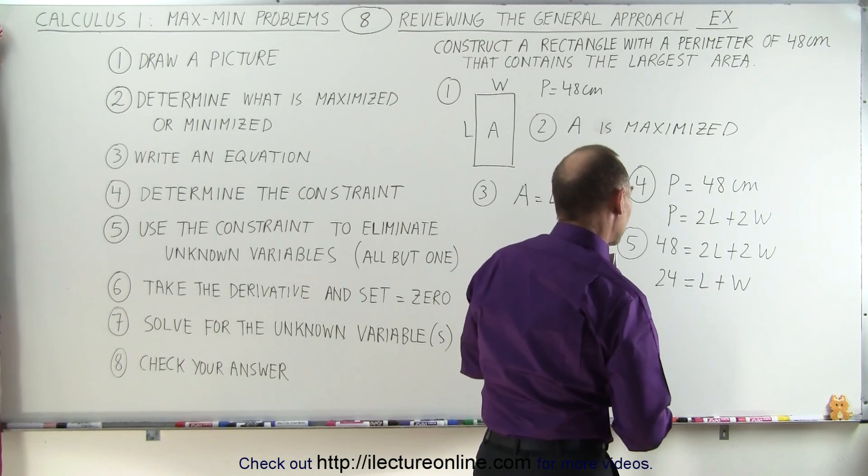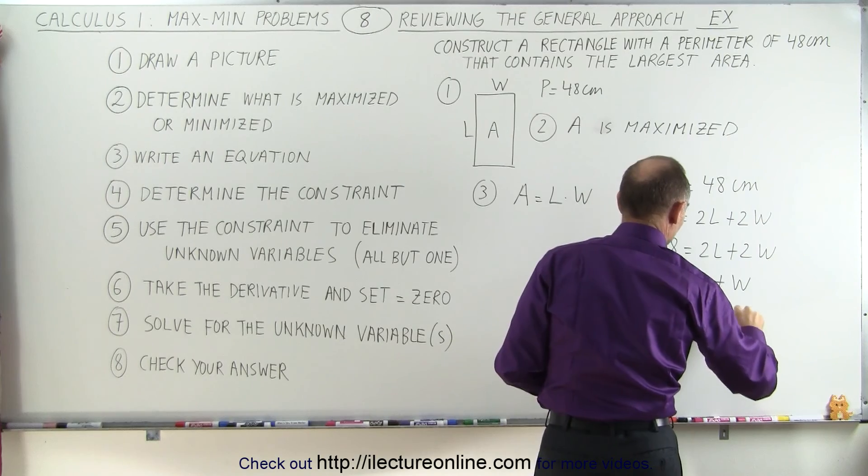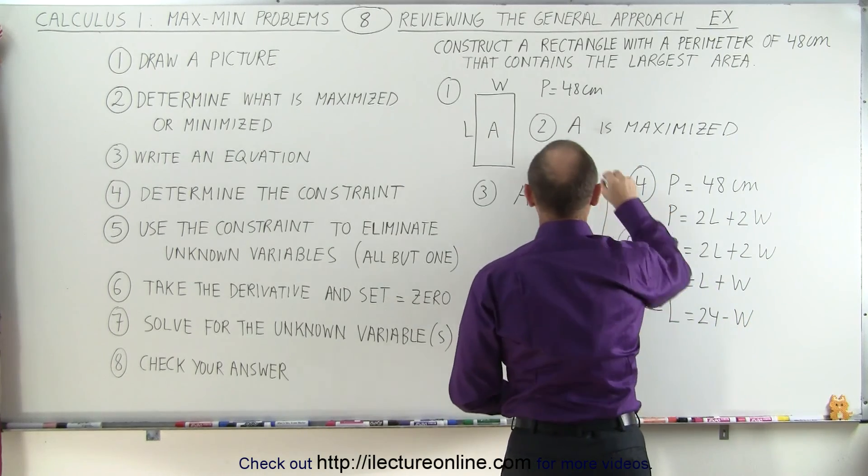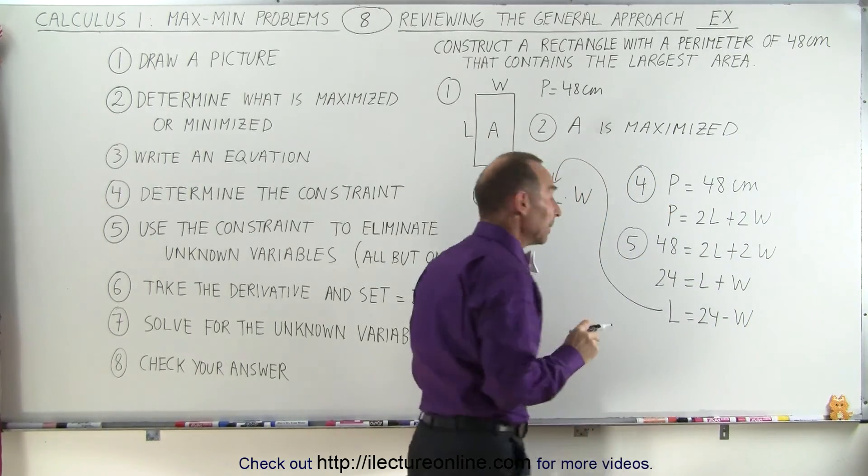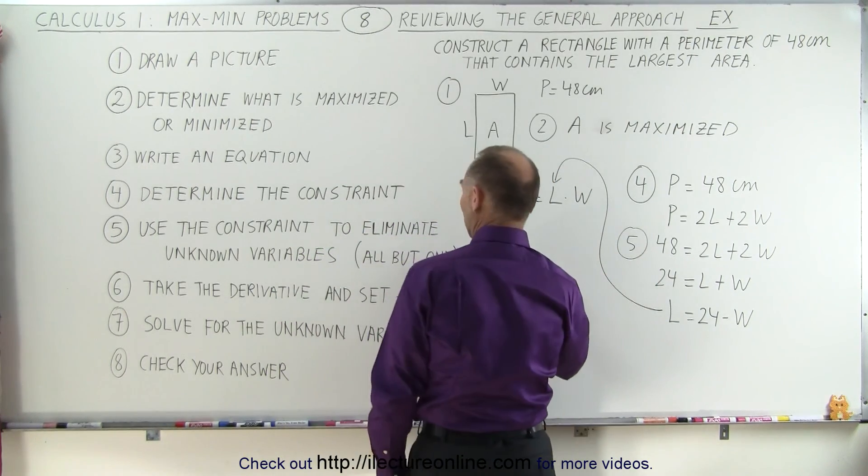Now we're going to solve for L. L equals 24 minus W, and we're going to substitute that into our equation here to eliminate one of our variables. When we do that we get the following equation.